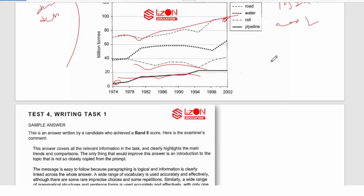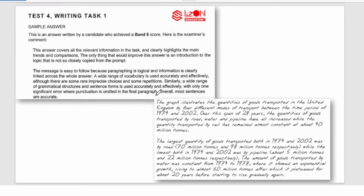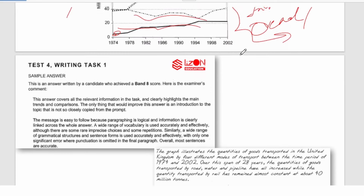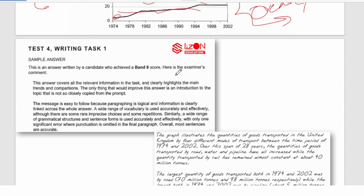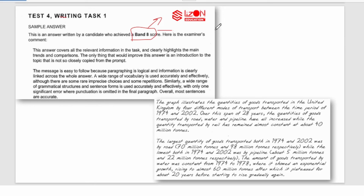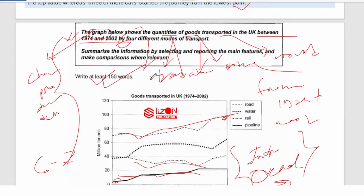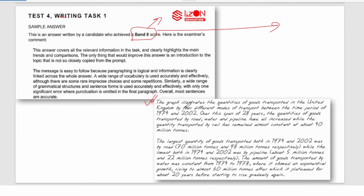Now I want to show you something fascinating. Let's look at what Cambridge says. In Cambridge books, answers are generally Band 6 or 7, but there is an exception — a student who got Band 8. This is from Cambridge. Let's look at why this student got 8, and compare it with the way we've been taught, so you can see how much you'll likely get.